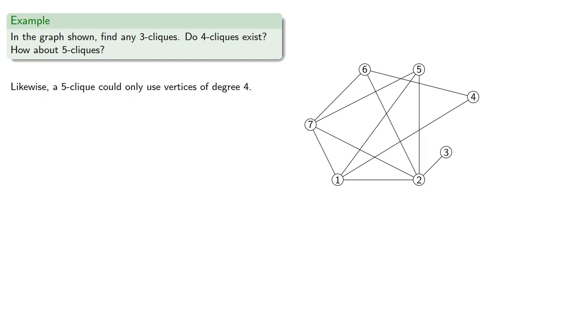Likewise, a 5-clique could only use vertices of degree 4, however we would need 5 of them. If we look carefully at the graph, we see that there are only 3 vertices with degree 4 or more, and so there is no 5-clique.